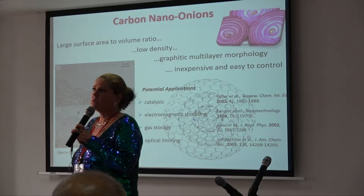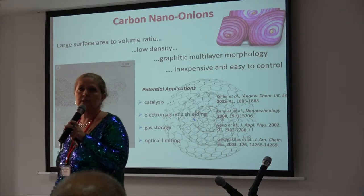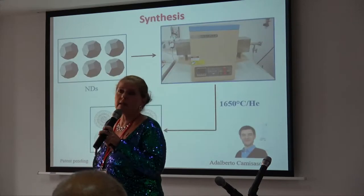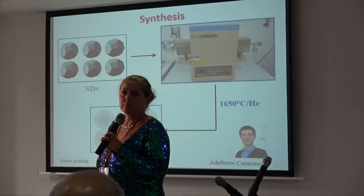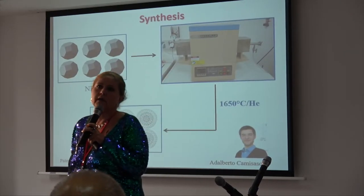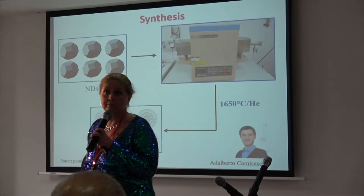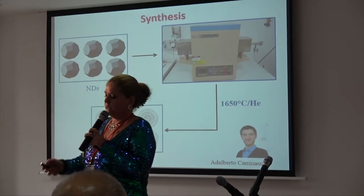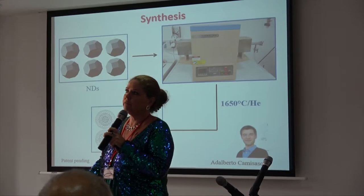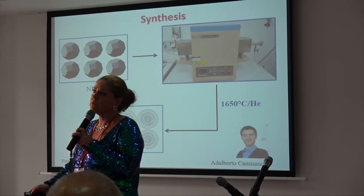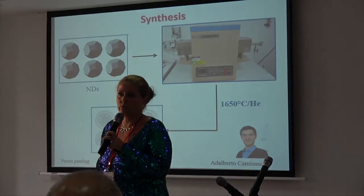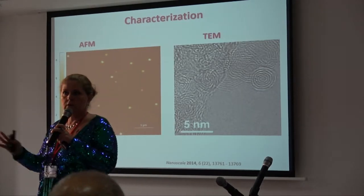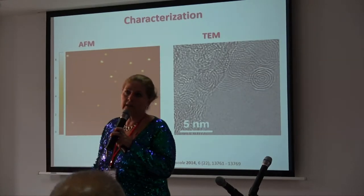They've been used for catalysis, electromagnetic shielding, gas storage, and optical limiting. We synthesize them in the lab simply by thermal treatment of detonation nanodiamond, graphitizing the carbon from sp3 in the nanodiamonds to sp2 in the carbon nano onions, and we characterize them using lots of techniques.